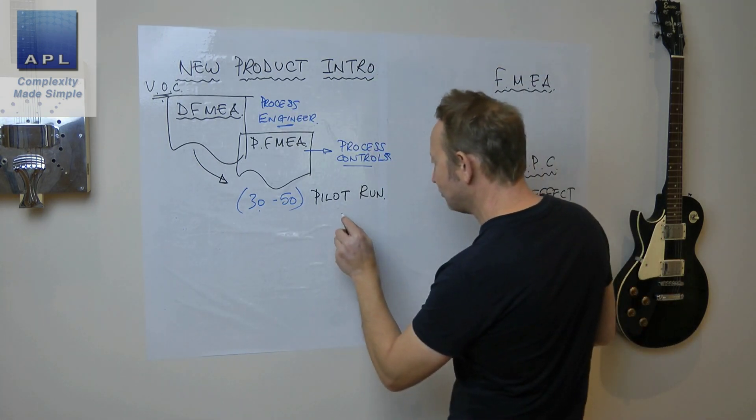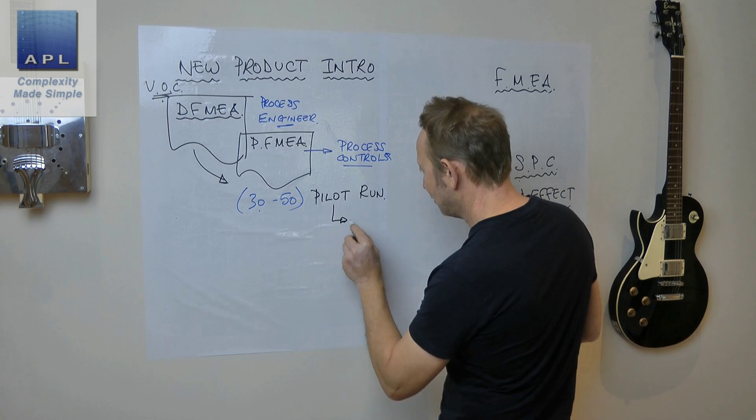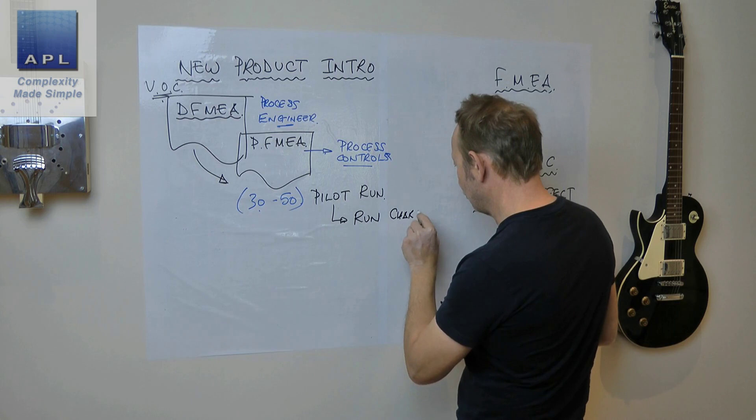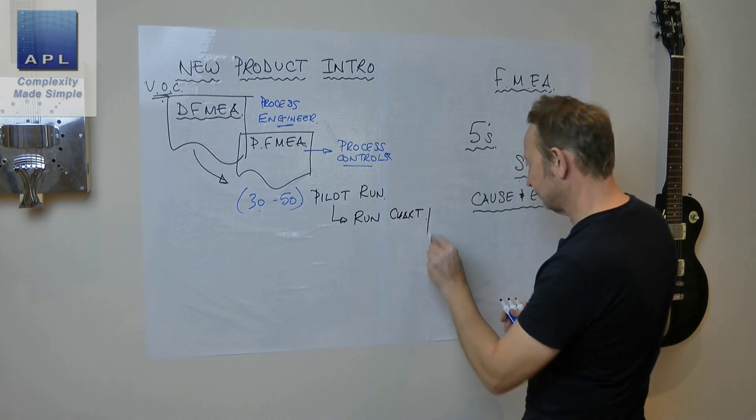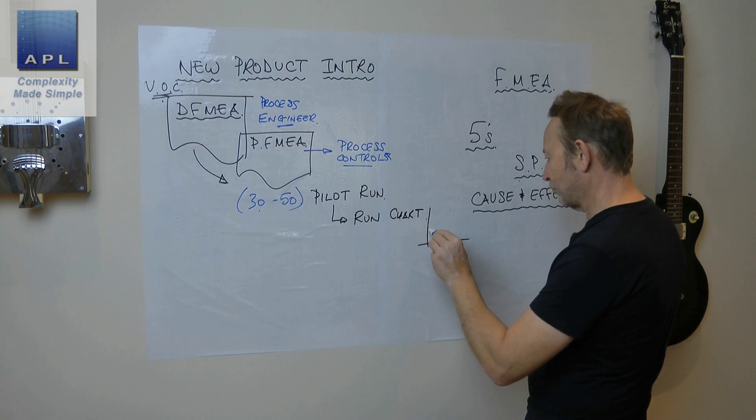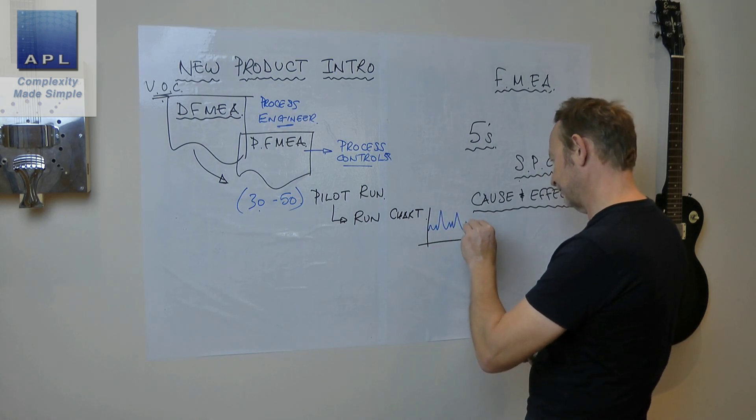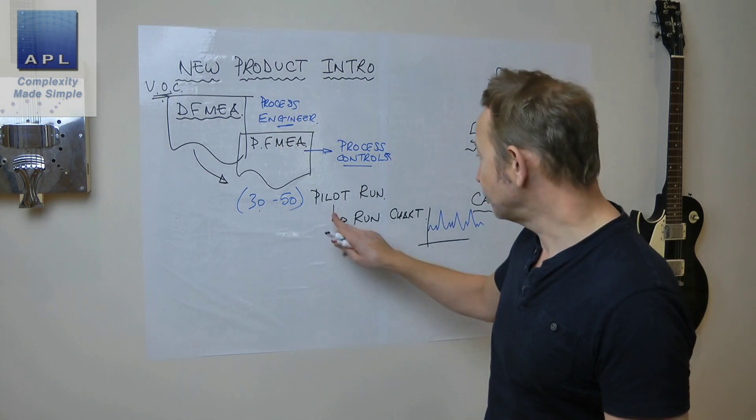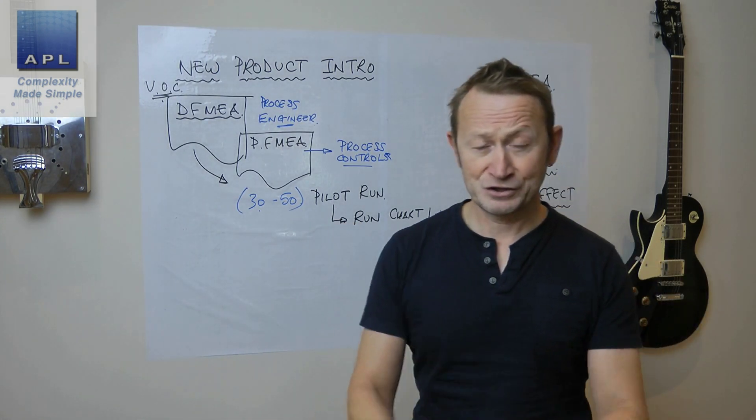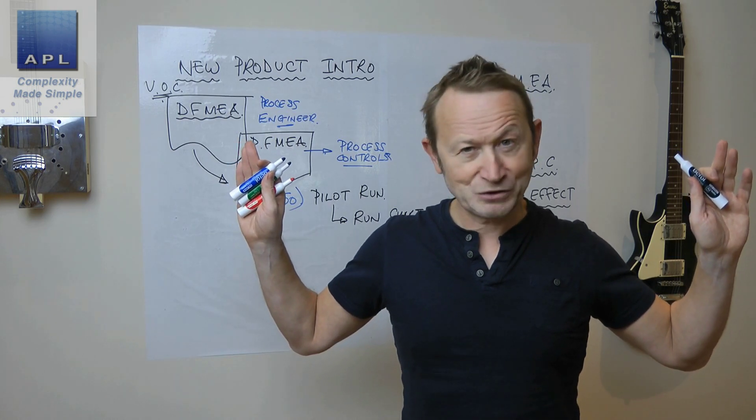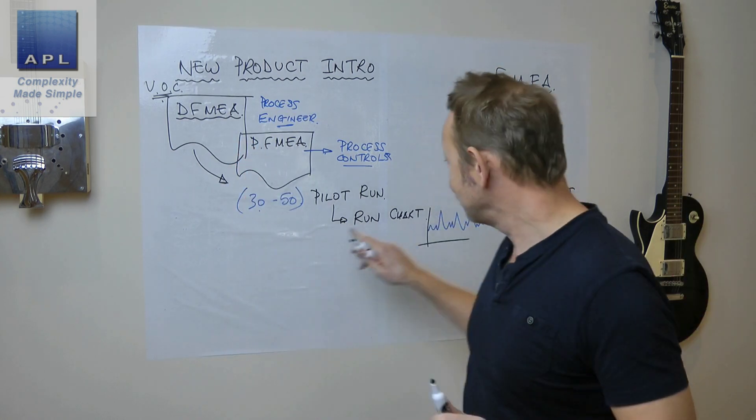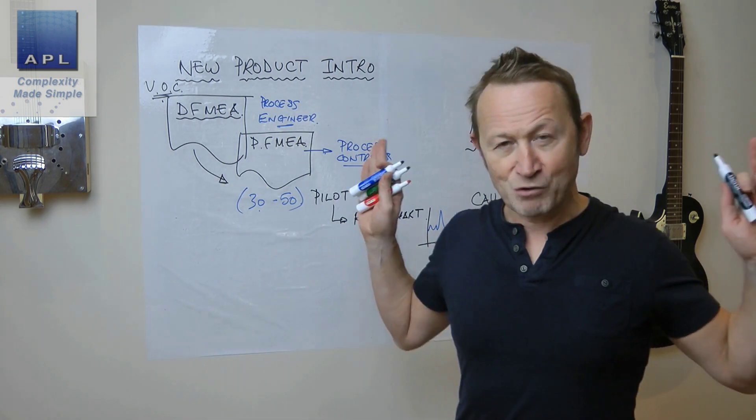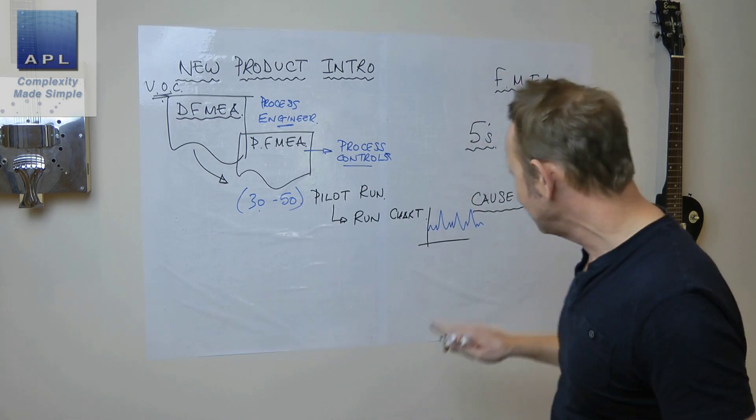What tools are we going to use? We're going to go run chart first. By the way, something else about the pilot run: 30 to 50, hands off, don't touch the process. We want to see real data here. We want real process information. Can only get that by taking your hands off.